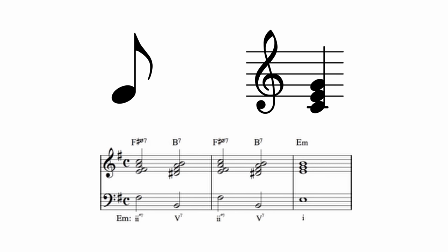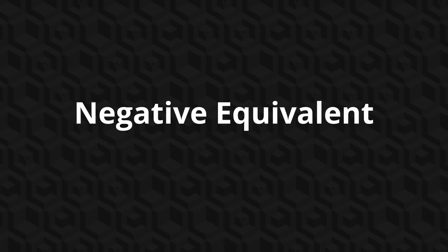It's based on the idea that in any given key center, every note or chord has a negative or inverted equivalent that can be found by reflecting the chord along that key center. If that sounds confusing, don't worry - negative harmony is quite intuitive when explained visually.